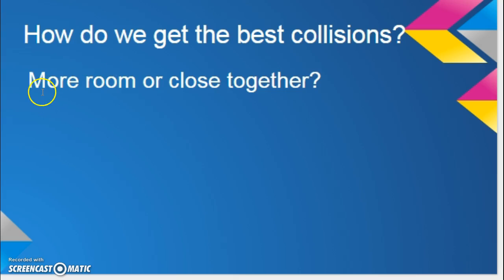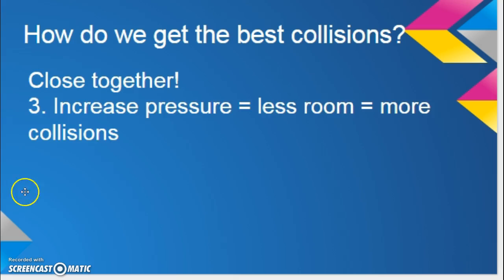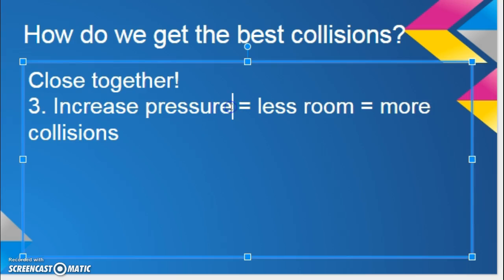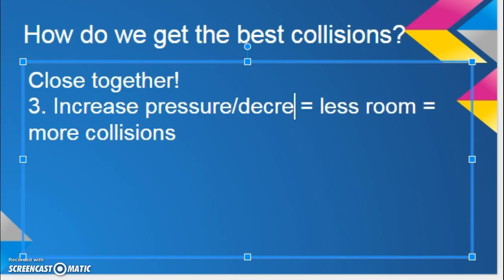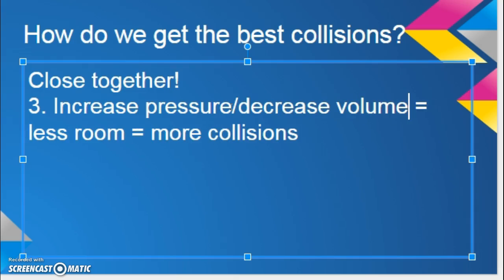What would give us the best collisions — if molecules had more room or if they were close together? If cars are on opposite sides of the track, chances are they won't collide. So we want to squeeze them together, and we can do that by increasing the pressure, which also decreases the volume. So we squeeze them together, there's less room, and we get more collisions. Increase pressure as well as decrease volume — they go together.